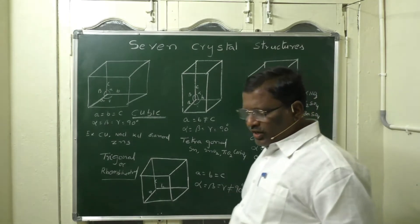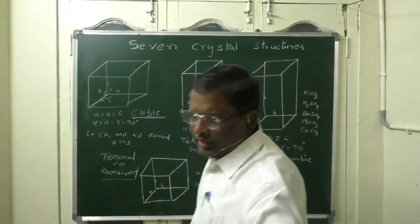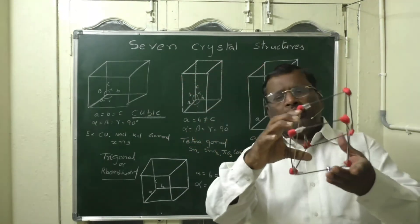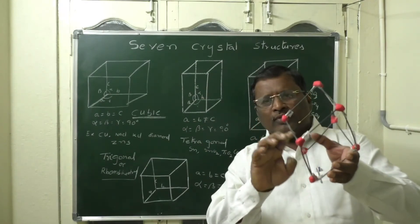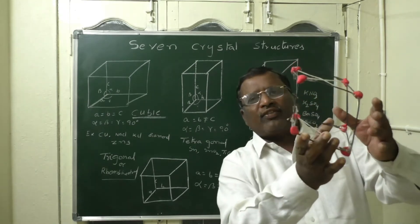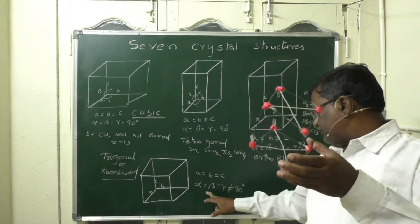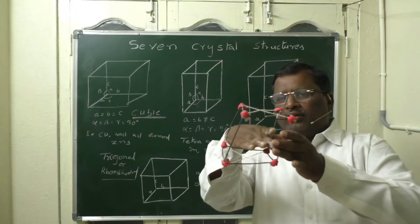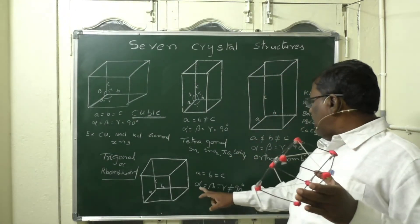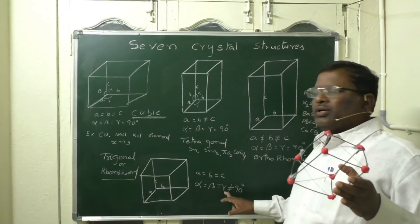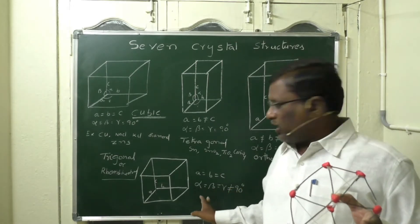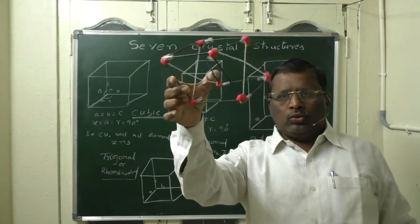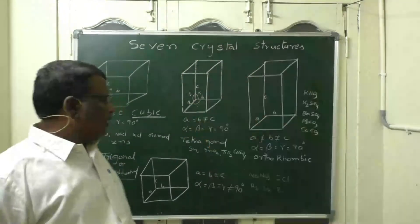The fourth structure is trigonal. In a trigonal unit cell, a, b, and c are all equal — just like cubic — but the angles are different. Opposite angles may be equal, but not all three: alpha = beta ≠ gamma, and none of them equal 90 degrees. You will not find a 90-degree angle between any two sides in trigonal.